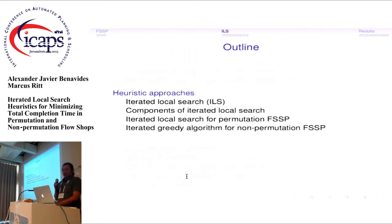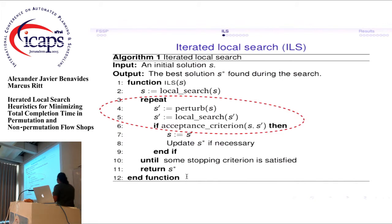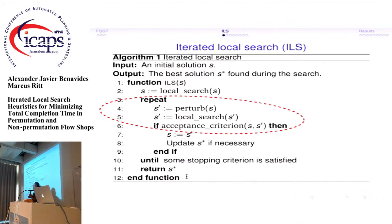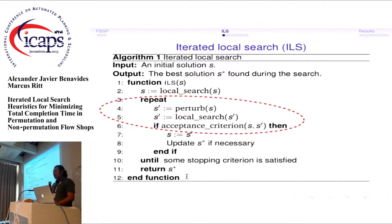Our heuristics are based on an iterated local search. It starts with a local minimum, perturbs the solution to escape that local minimum, then applies a local search to find another local minimum. Sometimes the new solution is better, sometimes worse, and we use an acceptance criterion to allow slightly worse local minima in order to diversify the search.